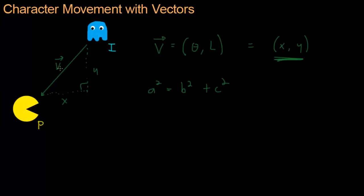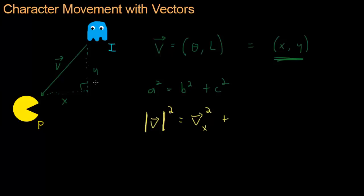What we want to find is the length of the vector, which we can denote by putting bars around the outside of the vector — those bars mean the vector's length. In this formula, a is the hypotenuse, and our vector length is the hypotenuse, so a is the vector length. We fill in our values: the vector length squared equals the X component of V squared plus the Y component of V squared.